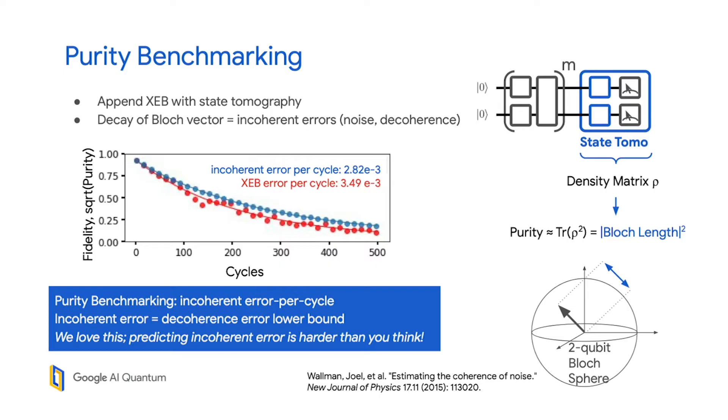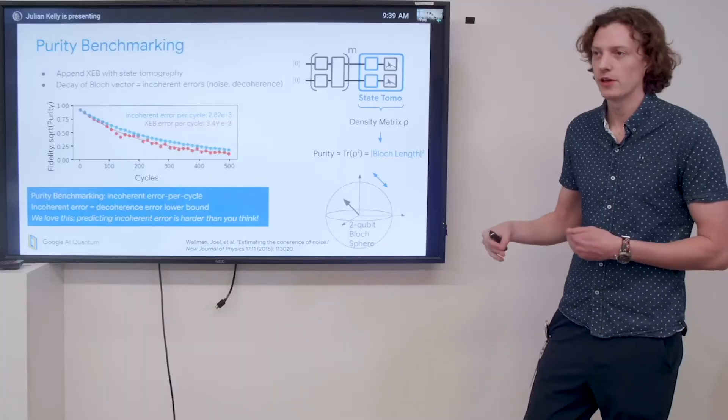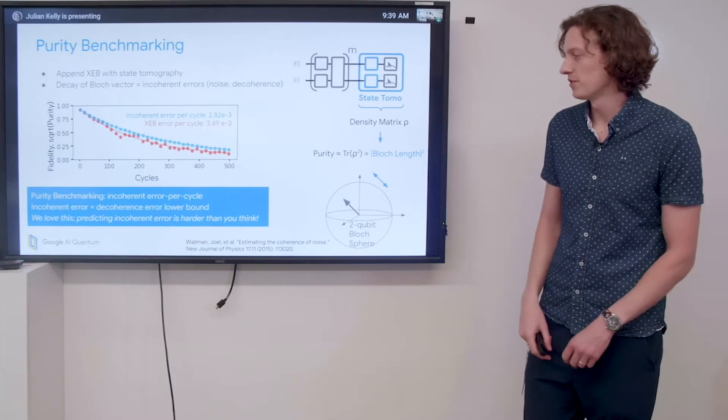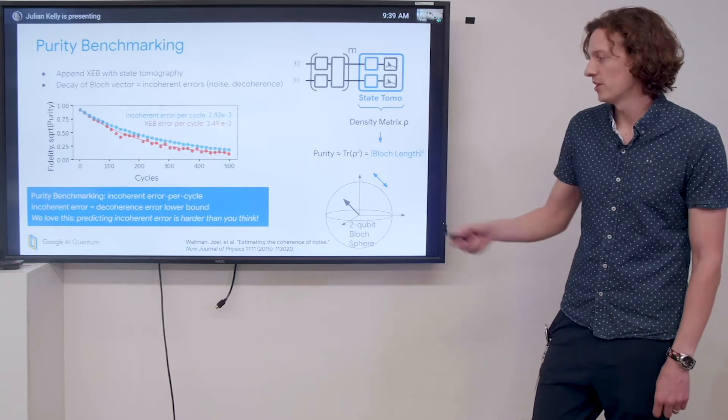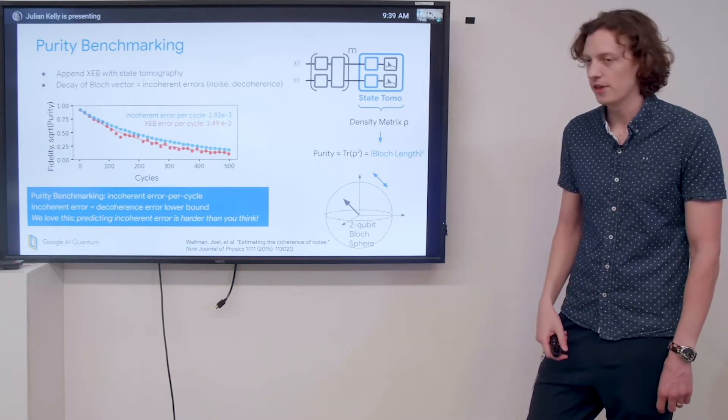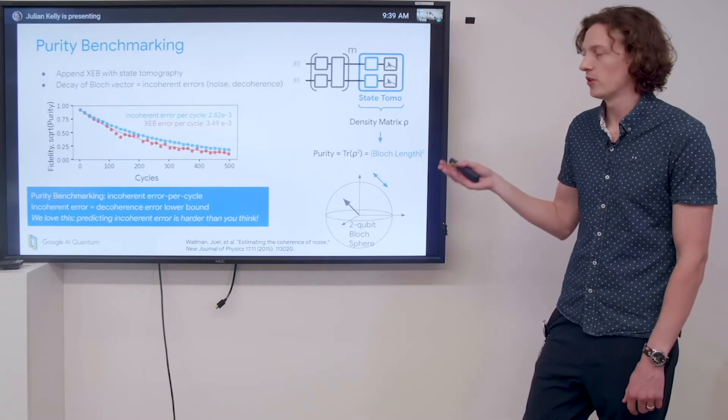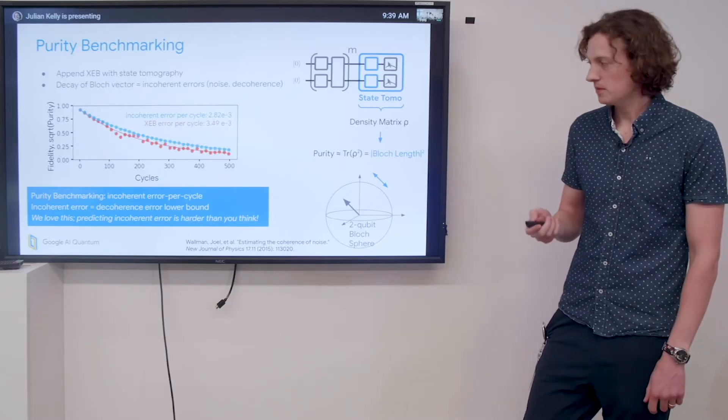Purity benchmarking allows us to figure out the incoherent error per cycle, and the incoherent error is a decoherence error lower bound—the best error we could possibly get. This is great, we use this all the time. It turns out that predicting incoherent error is harder than you think, and it's very nice to have a measurement in situ in the experiment that you're caring about to measure it directly.